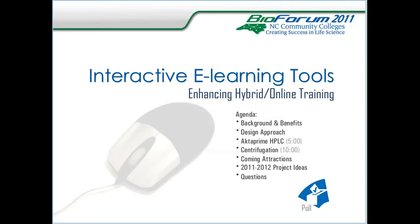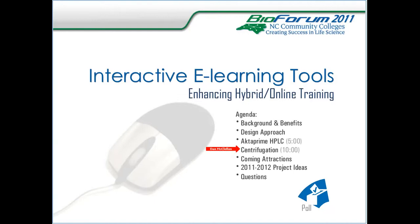All right. So here are the things that we're going to talk about. We're going to move fairly quickly this morning so that we can get you out on time. We're going to talk about the background and benefits of interactive e-learning tools — what they are and how they can help you. We're going to talk about our design approach, and then we're going to look at two examples: one is ActivePrime HPLC, and the other is a centrifugation e-learning tool. We'll also look at some coming attractions, some project ideas for this year and next, and then we'll take your questions.